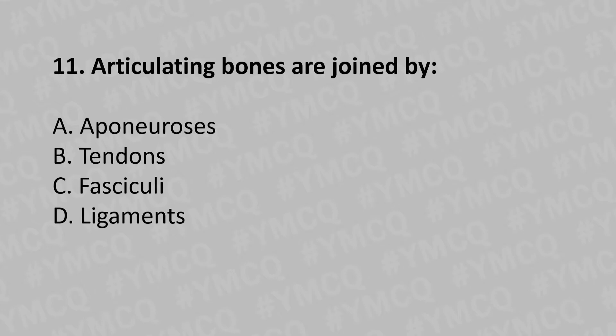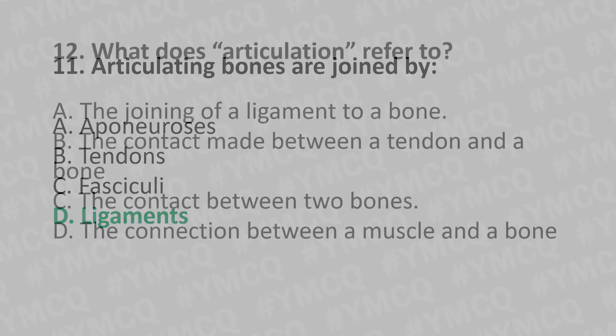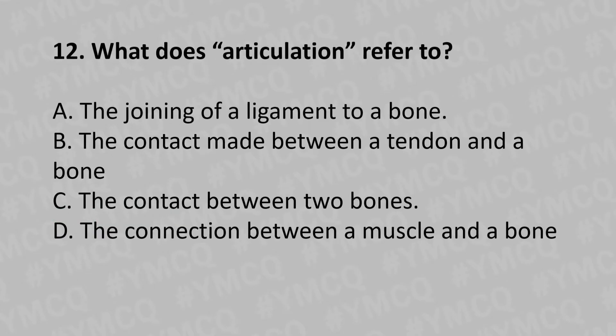Moving to our 11th question: Articulating bones are joined by? Option A: aponeurosis, Option B: tendon, Option C: fasciculi, Option D: ligaments. The answer is Option D: ligaments.